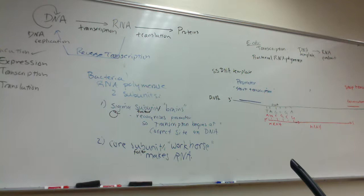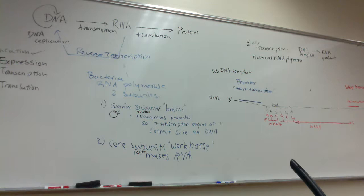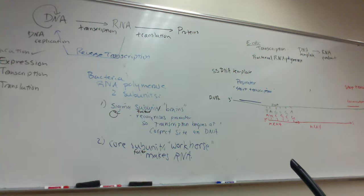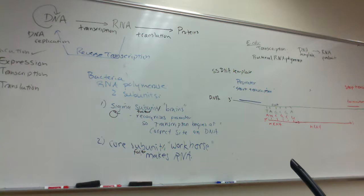In prokaryotes — members of domain bacteria and archaea — often the genes for their proteins are arranged so that you have genes for protein 1, protein 2, and protein 3 without a transcription terminator between them. So RNA polymerase finds the promoter, transcribes the gene for protein 1, keeps going, transcribes protein 2, keeps going, transcribes protein 3, until it hits the terminator. As a result, the mRNA carries information for two or more proteins — this is called polycistronic mRNA.